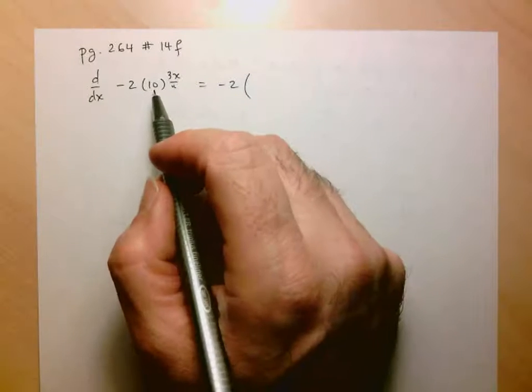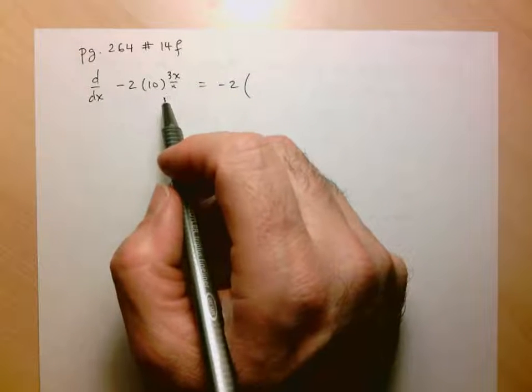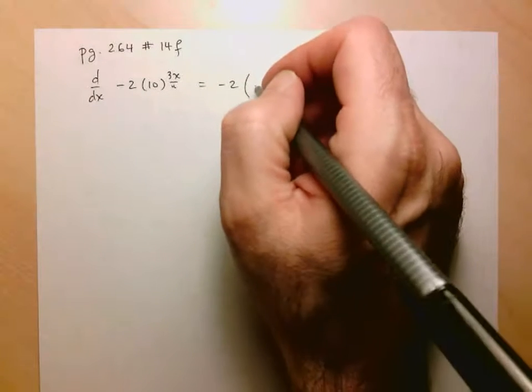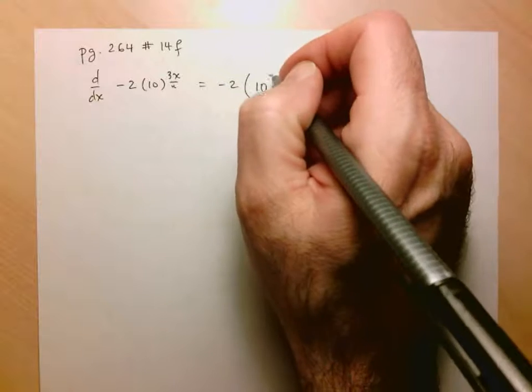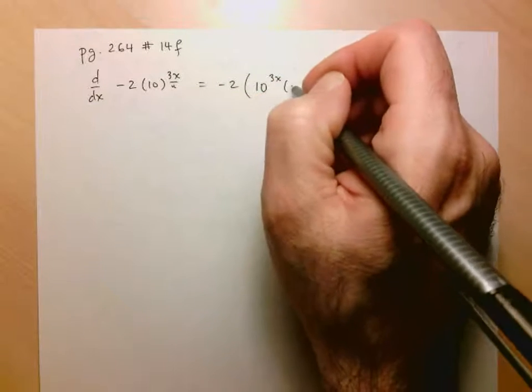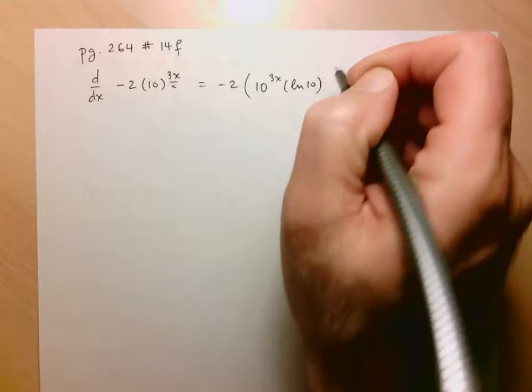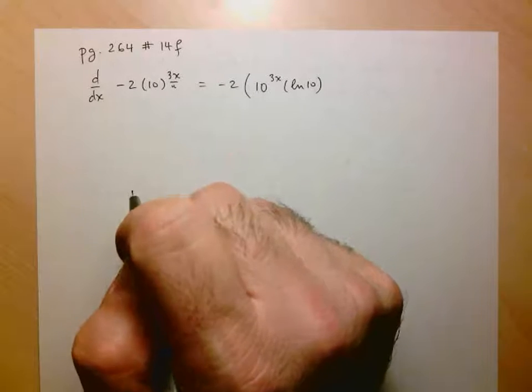First I find the derivative of 10 to the u. The derivative of any exponential function is just that same function, so 10 to the u, 10 to the 3x, times ln 10, because 10 is the base.